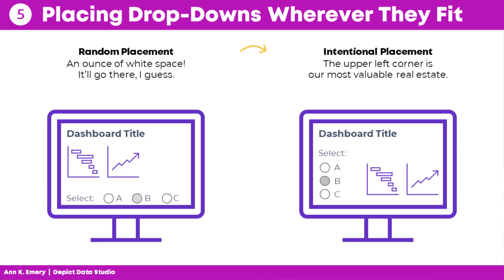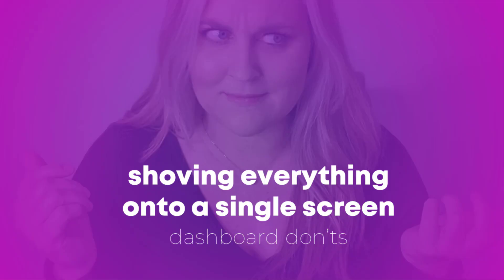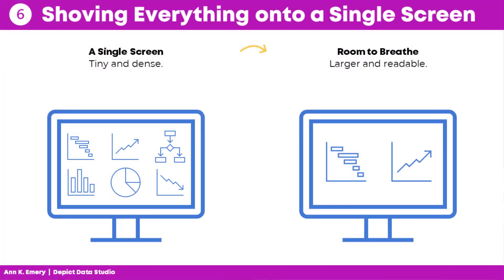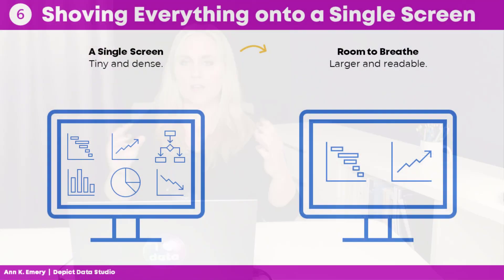Mistake number six: shoving everything onto a single screen. I had a rigid definition that a dashboard has to fit on a single screen or page, and that's false. People can easily click to the next window or flip to the next page — it doesn't have to be crammed in with size-six font and no white space. A good rule of thumb is literally a thumb: aim for at least a half inch to an inch of white space between your graphs and call-out boxes, so the audience doesn't feel overwhelmed by the density of data.